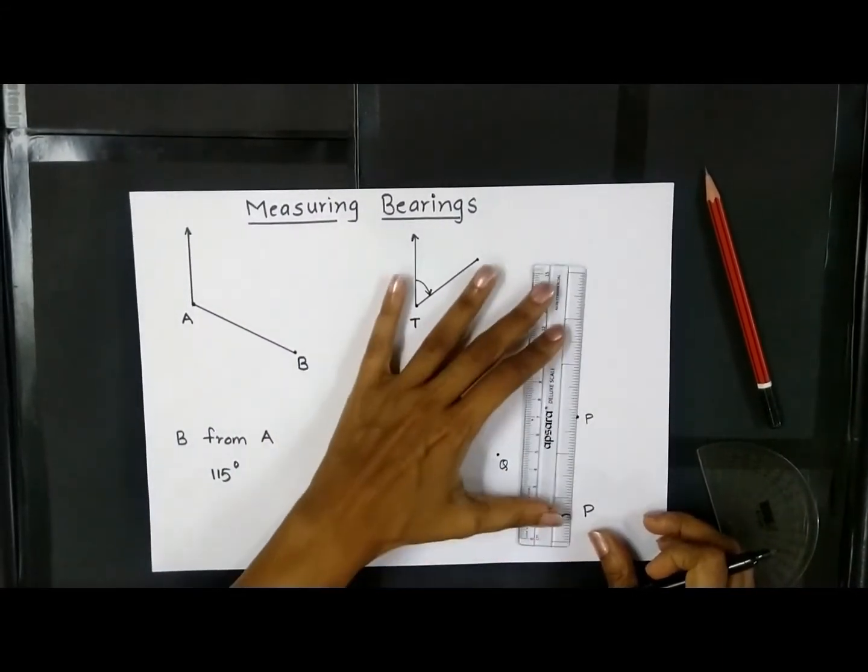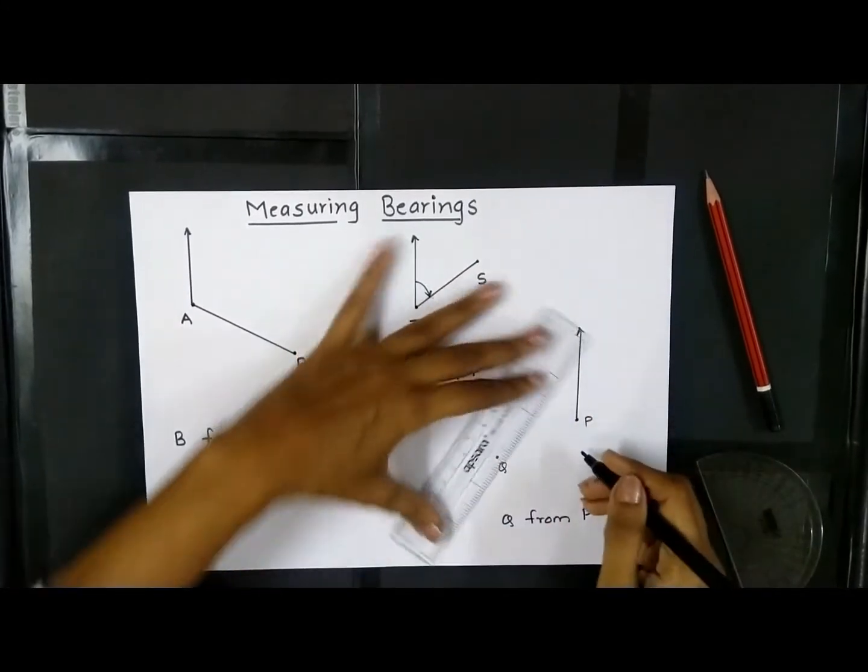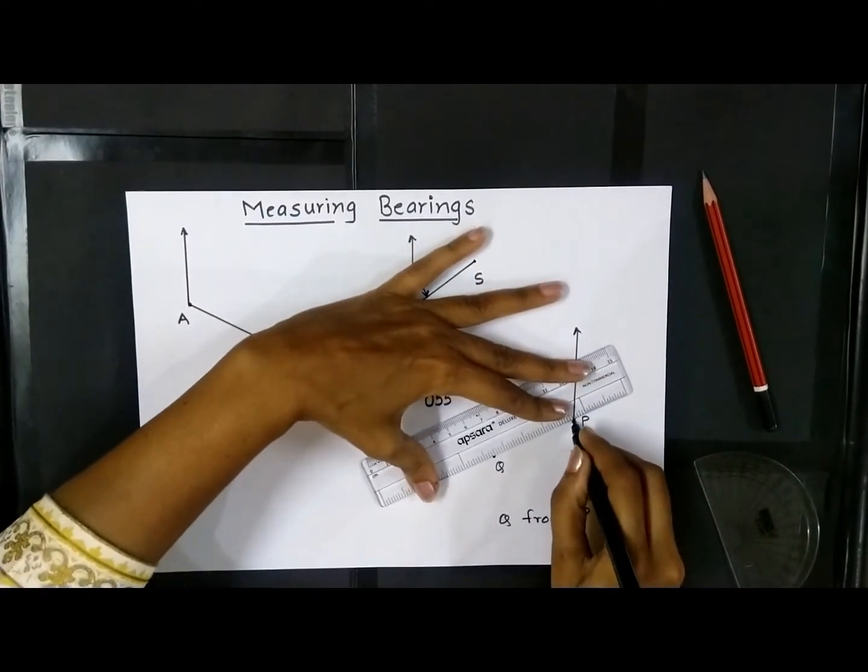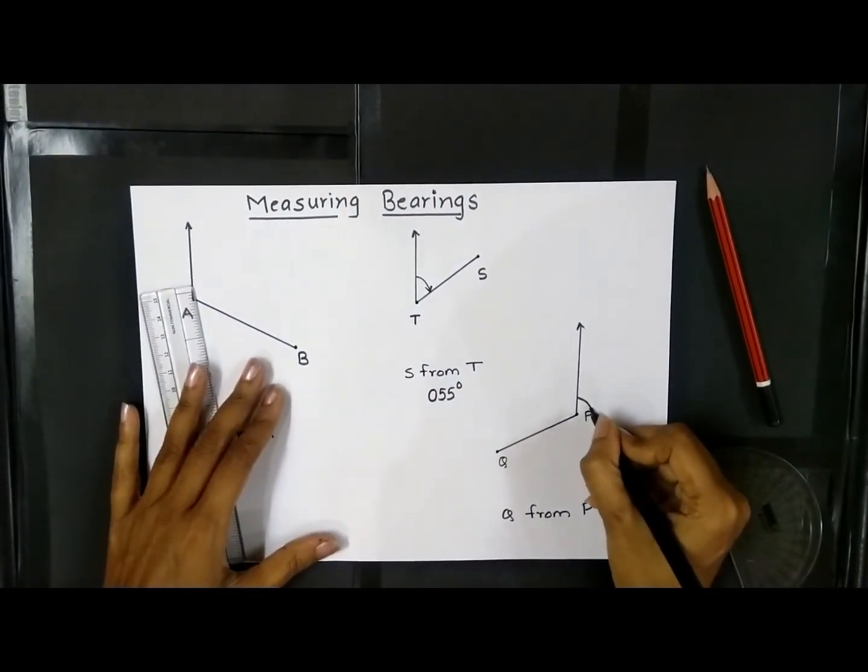We draw a perpendicular north at P, join PQ, and then we have to measure bearing. As we have already learned, we measure it in a clockwise direction.